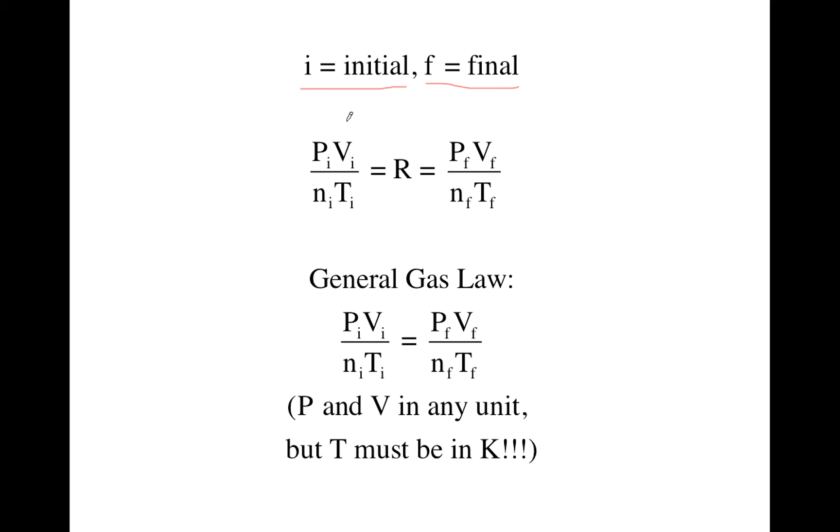So if you have a sample of gas and you measure the pressure, volume, moles, and temperature at some point in time, let's call it the initial point in time, and you find that ratio PV over NT, that's going to equal R.